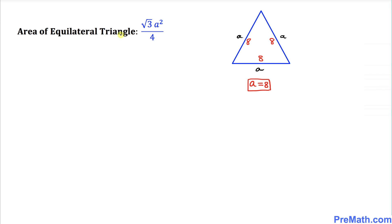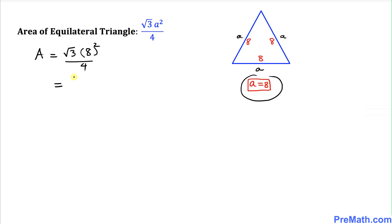Let's find the area of the equilateral triangle first. Using the formula (√3 / 4) × a², and since each side a equals eight inches, we get (√3 / 4) × 8² = (√3 × 64) / 4 = 16√3.